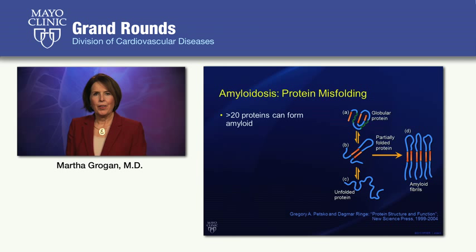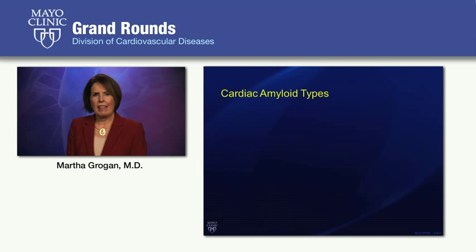Amyloidosis is a fascinating disorder of protein misfolding. There are over 20 different proteins that can form amyloid fibrils, but fortunately for us as cardiologists, only three of those really deposit in the heart. We'll review the three most important types of amyloidosis that can cause cardiac involvement.